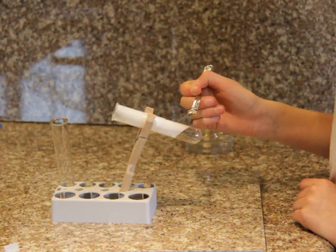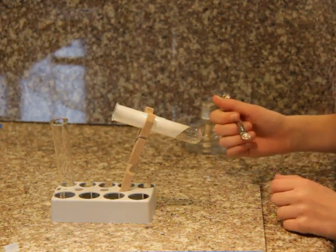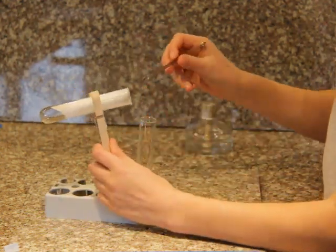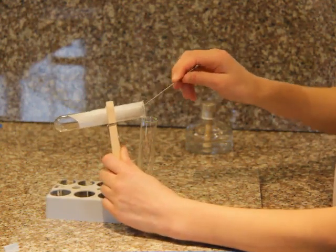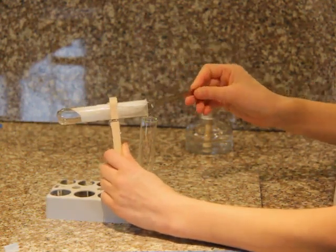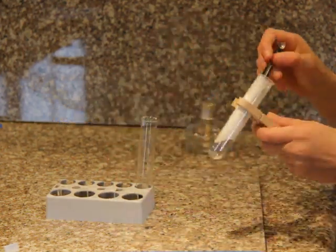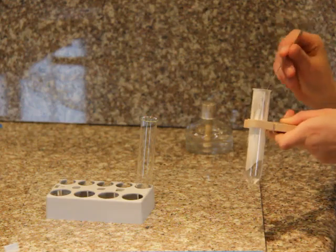Now, for experiment number seven. Carefully scrape all the white residue from the sides of the test tube into a second clean, dry test tube. This process is very slow, so it may take several minutes.